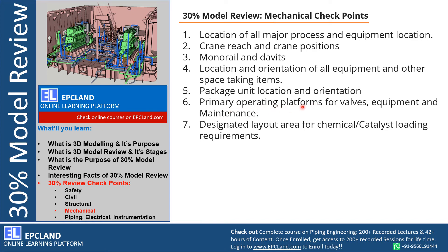Primary operating platforms — if any vessel or tank is there, there will be valves and maintenance requirements, and those shall be reviewed during 30% model review. Designated layout area for chemical and catalyst handling — for example, if there is a vessel where chemical loading or catalyst loading and unloading is done, the procedure for how the vehicle comes, how the crane comes, how loading and unloading will be done, what kind of blind flanges are required, whether additional fittings or space is required to carry out those activities — all these will be discussed and checked. If any gap is found, it will be listed and can be looked into during the next stage of model review. This is how the mechanical team's checkpoints are captured during 30% model review.